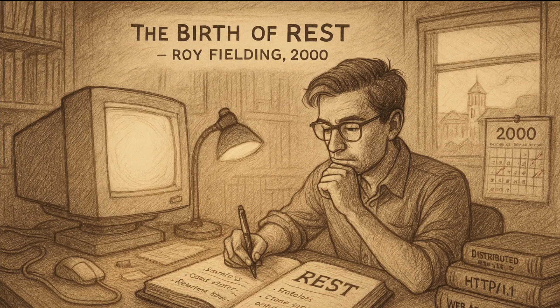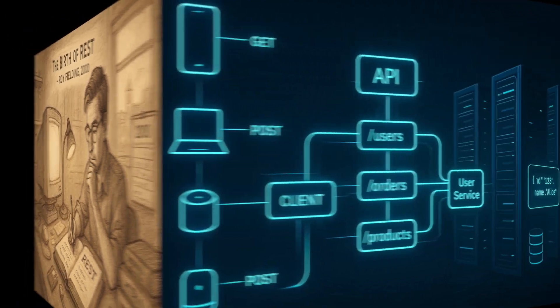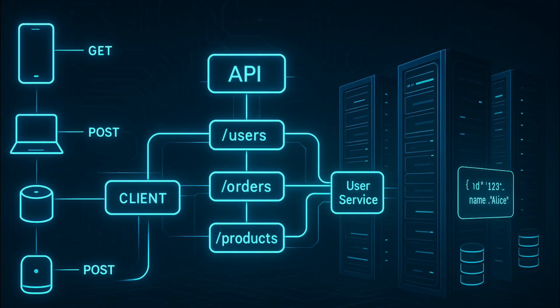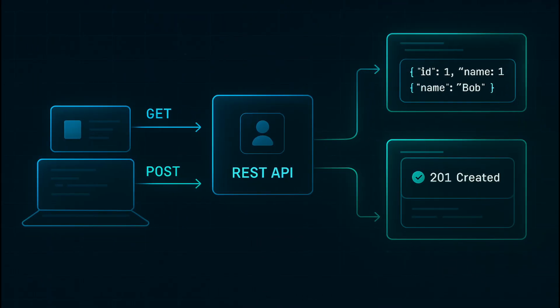REST, or Representational State Transfer, was introduced by Roy Fielding in his 2000 doctoral dissertation. It quickly became the dominant model for building APIs on the web. REST treats data as resources. Each resource has a unique URL and you interact using standard HTTP methods like GET, POST, PUT, and DELETE.